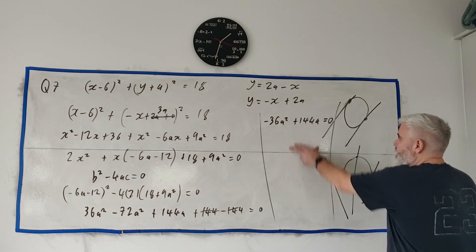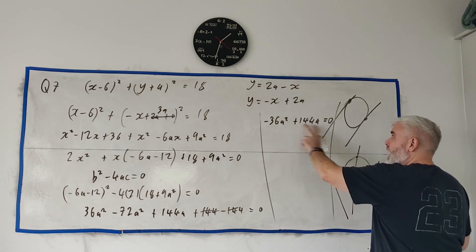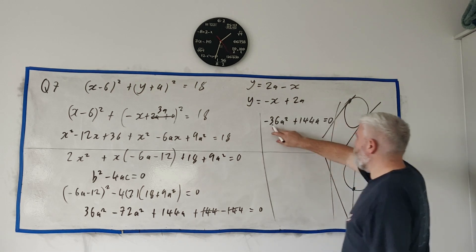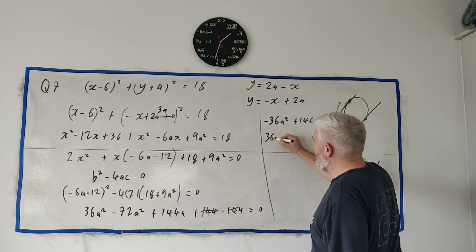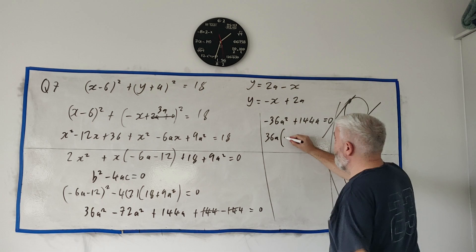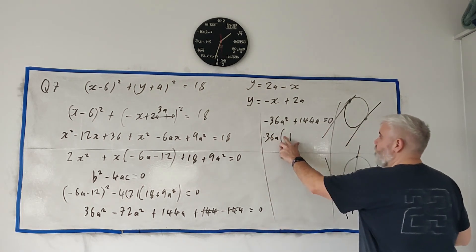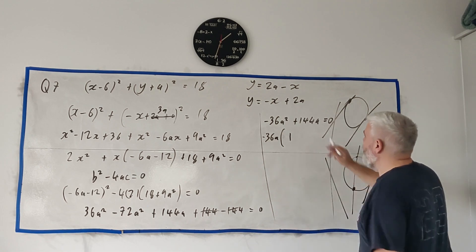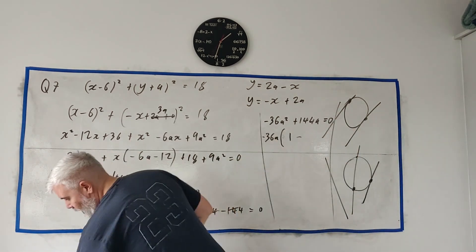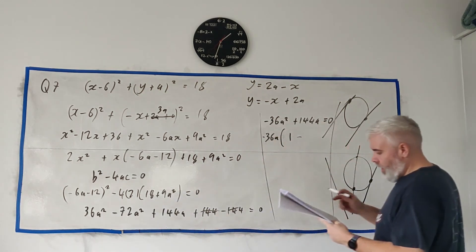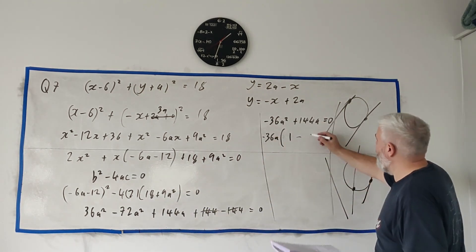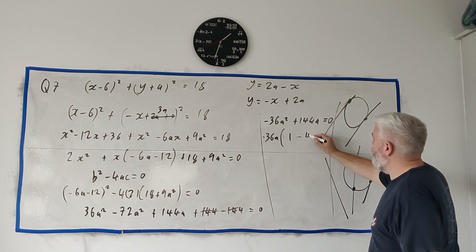Let's squeeze this in here. We can factorize this. A goes into both of them, actually 36 A goes into both of them. 36 A goes into this minus 1 times, let's take the minus out. Minus 36 goes into it one time. Minus 36 goes into that, yeah, 4, so minus 4 times.